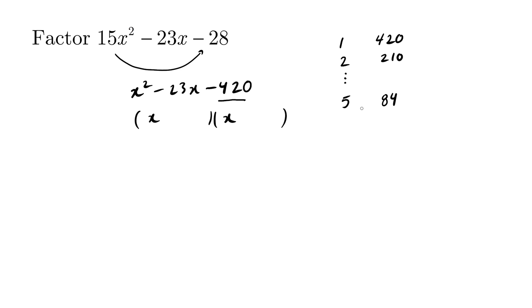By the way, how did we get 5 times 84 is 420? We can try long division. 420 divided by 5, not using a calculator.